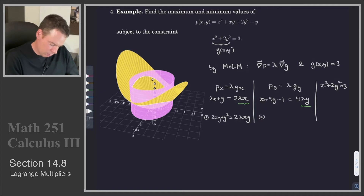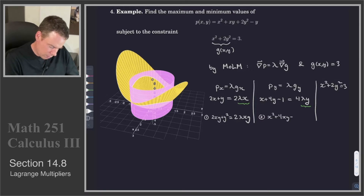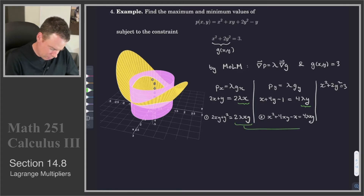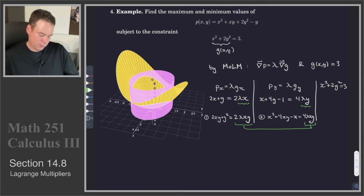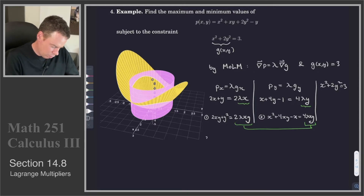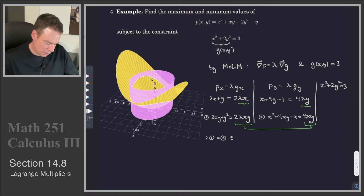The second equation I'll construct is the second gradient equation multiplied by x, giving: x squared plus 4xy minus x equals 4 lambda xy. Now the right-hand side of the first modified equation is 2 lambda xy, and the right-hand side of the second is 4 lambda xy. So if I multiply equation 1 by 2, the left-hand sides of both equations are equal to 4 lambda xy.